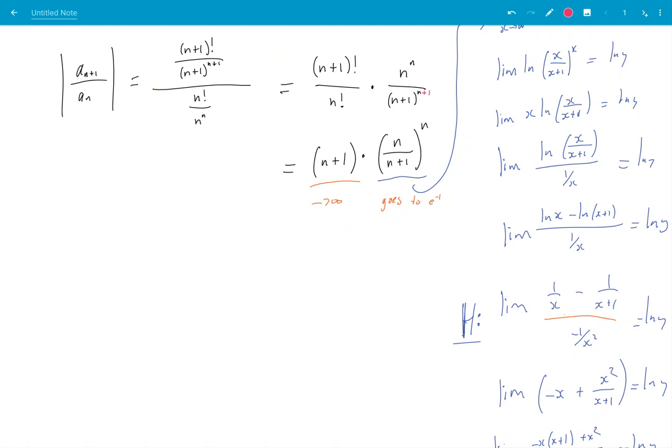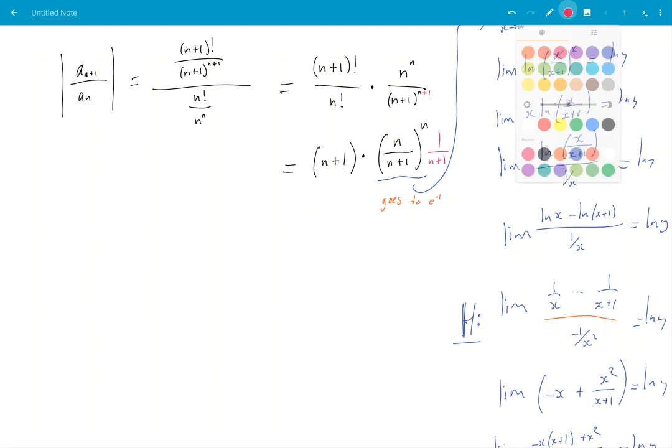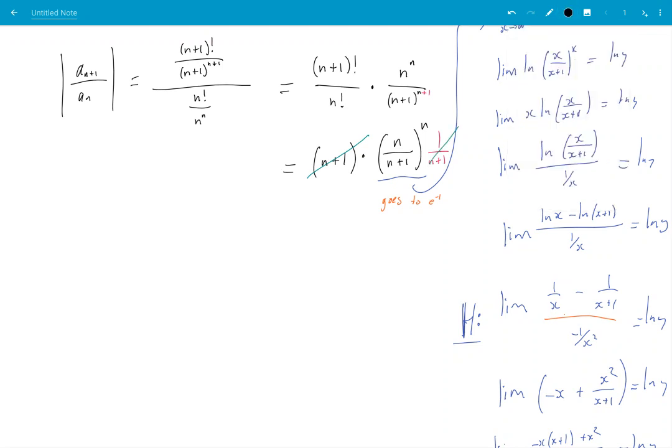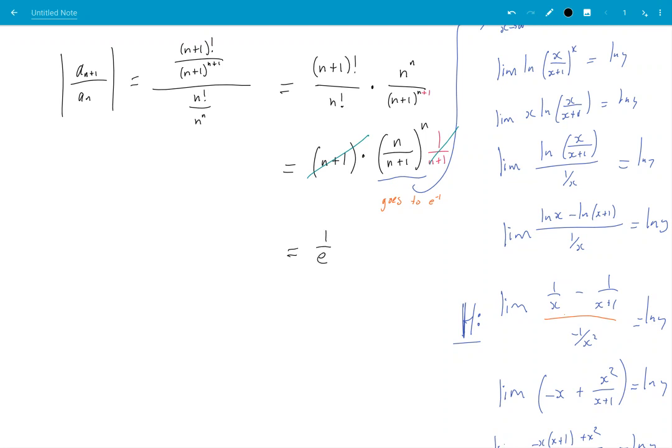So what will that change? That will give me a 1 over n plus 1 out here. Erase that. So what's happening? New color. Okay. That is canceling with that. So my limit here is just 1 over e, which is less than 1. Aha. That's a bit more. That's what I was expecting. So my limit is less than 1.